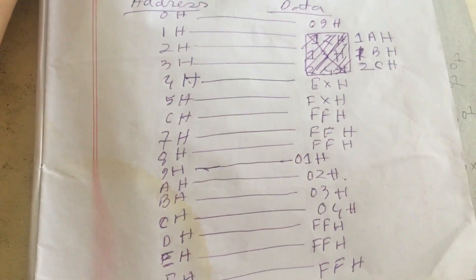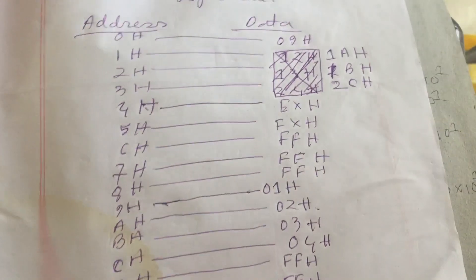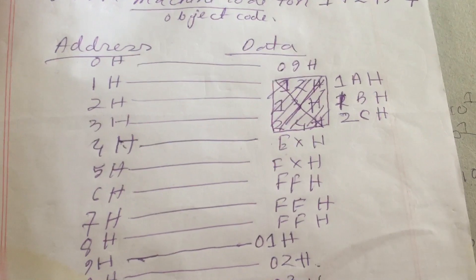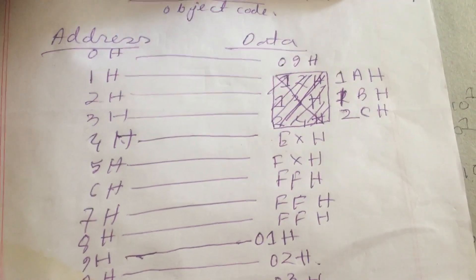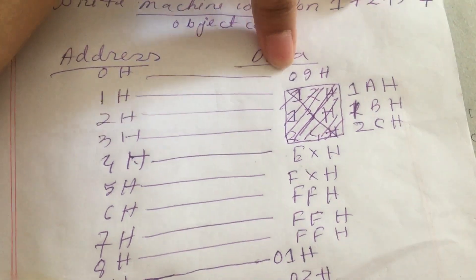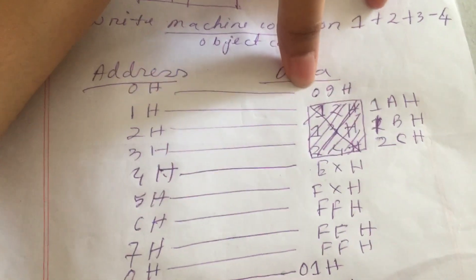And write machine code for this. It could be said like this: write object code for this. So addresses will be same like before. Here we are, what we are doing actually, if you see like...